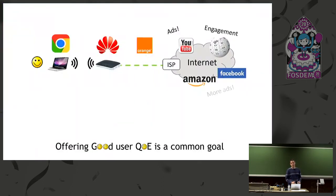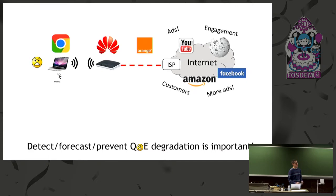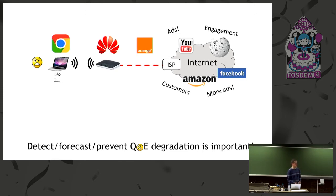I'm not a web developer, so I'm going to have a completely different focus. Right now I'm working at an equipment vendor, so we have a very much lower-layer focus. No matter what you're working on — whether you're a browser maker, a content service provider, an internet service provider, or an equipment vendor — what you care about is that users are happy. Quality of experience is a common goal. If something goes bad, you want to detect it fast, forecast before things go bad, and if you're good at forecasting, you can try to prevent things from going bad so your users don't churn.